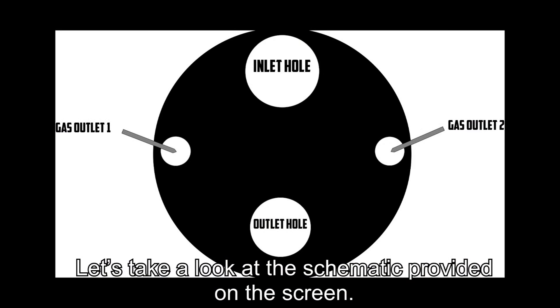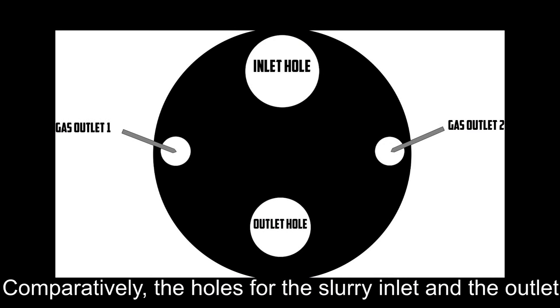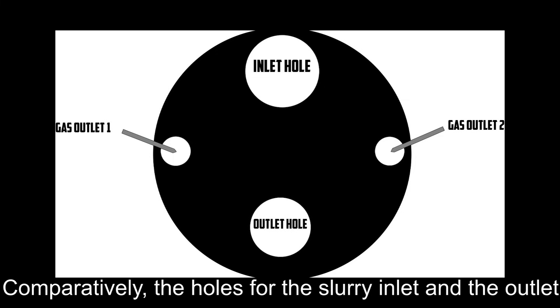Let's take a look at the schematic provided on the screen. Comparatively, the holes for the slurry inlet and outlet should be bigger than the ones for the two gas outlets.